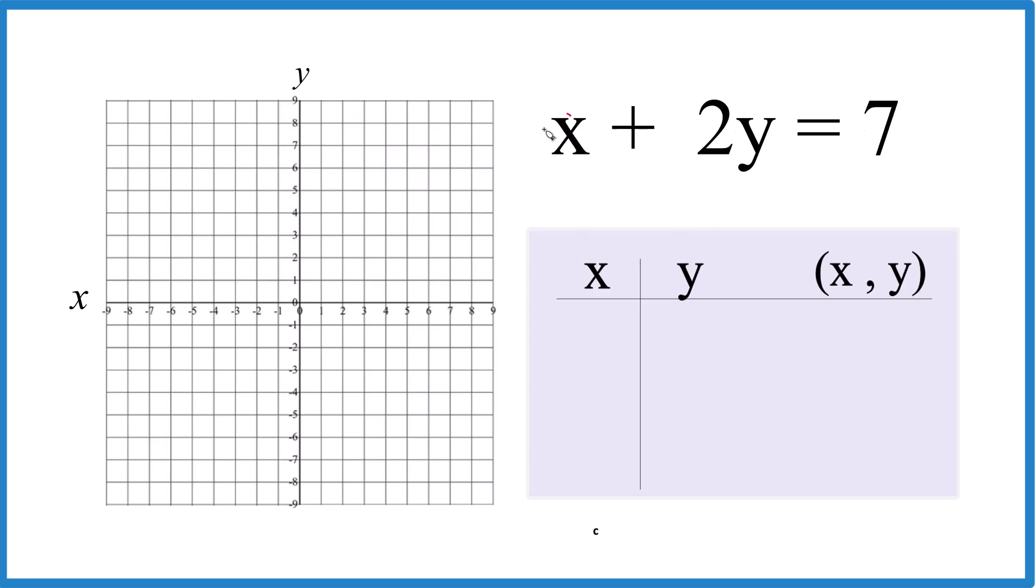We could put 0 in for x, but then we have 2y equals 7 and we get some kind of weird fractions. Why don't we do this? Why don't we put 1 in for x? So x is 1. 1 plus 2y equals 7. Let's subtract 1 from each side. 2y. That equals 7 minus 1 is 6 because 1 minus 1 equals 0. And we just divide both by 2. That equals 1 and 6 divided by 2. That's 3. That's our first point.